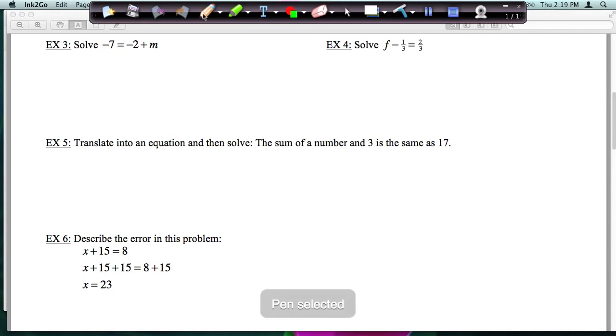Okay, let's go ahead and continue. Let's look at example 3. I'm solving negative 7 equals negative 2 plus m.